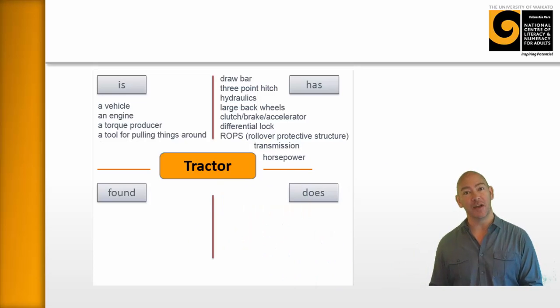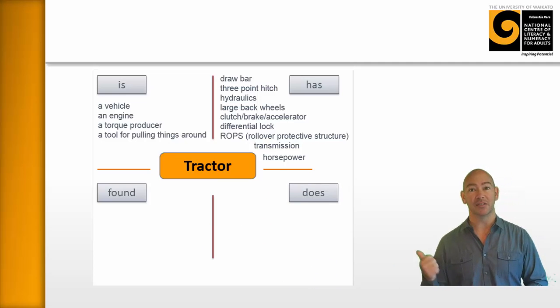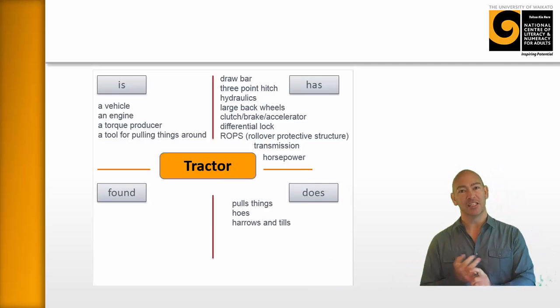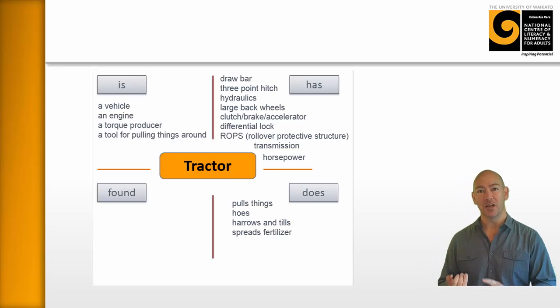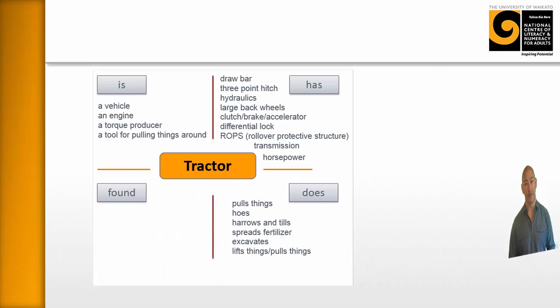Here were some words that the learners generated around what a tractor does. They said a tractor pulls things, hoes, harrows, tills. A tractor can spread fertilizer. A tractor can excavate. A tractor can lift things, pull things, etc. And finally,